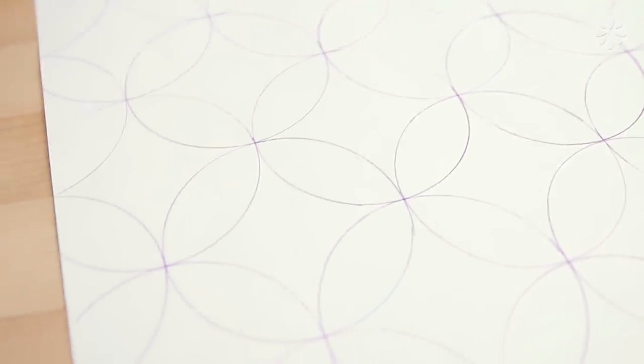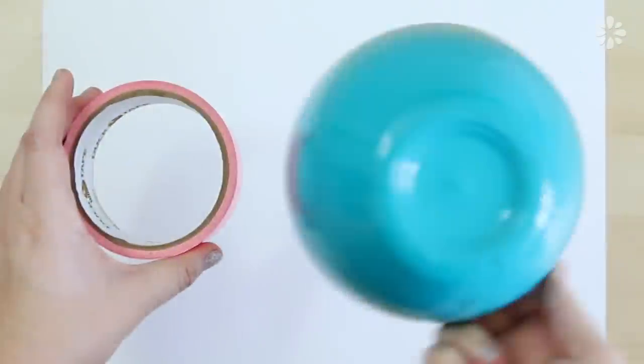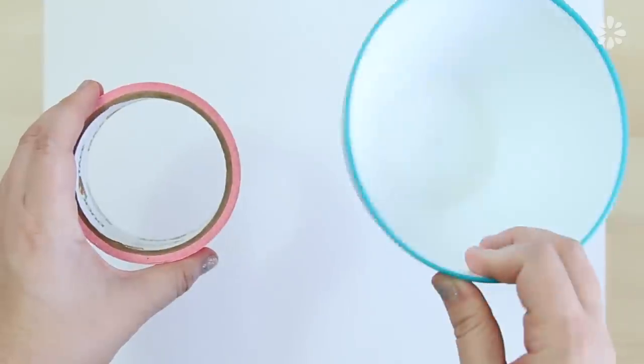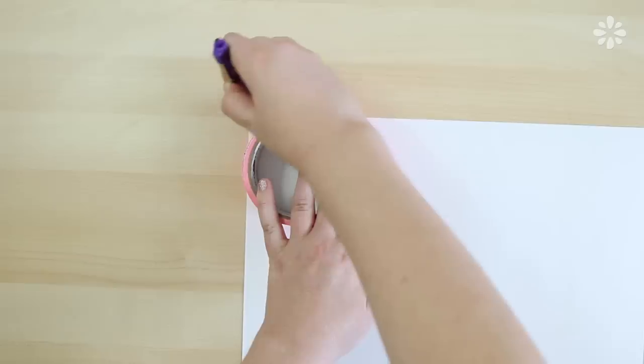For this circle lock pattern, here are a couple of different ways you can make it. First I'll show you the basics of the pattern. All you need is a tool to make circles with or something round to trace. In my case I'm using a tape roll or you can use a bowl.